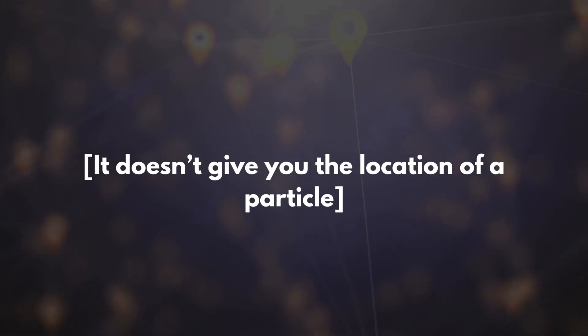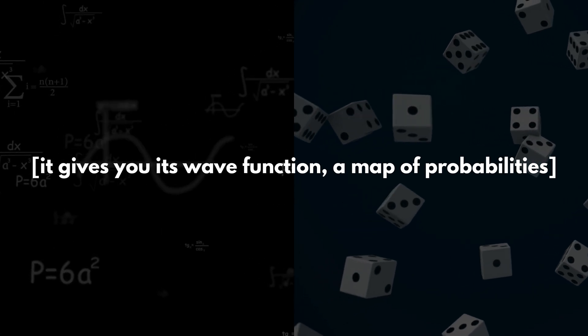Every physical theory needs a backbone. For quantum physics, that's the Schrodinger equation. It doesn't give you the location of a particle. It gives you its wave function, a map of probabilities. It tells you where the particle is likely to be.